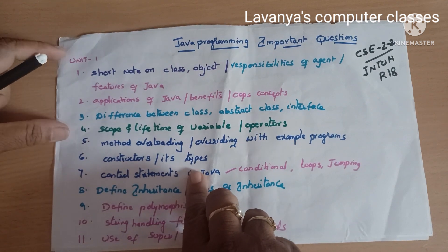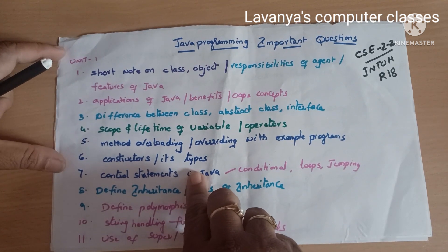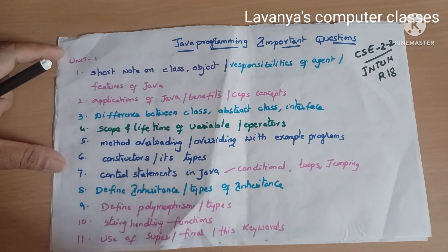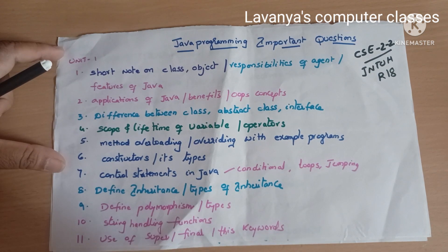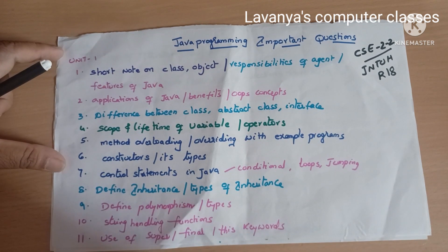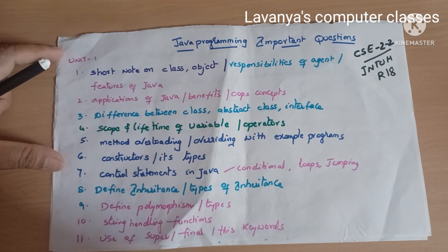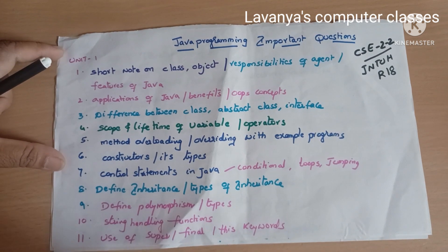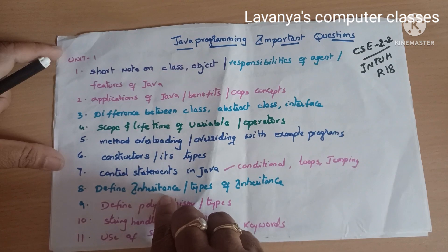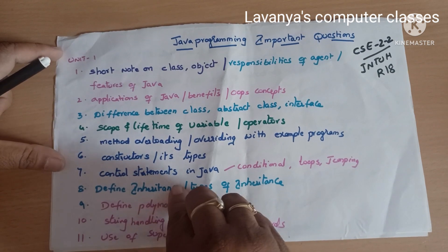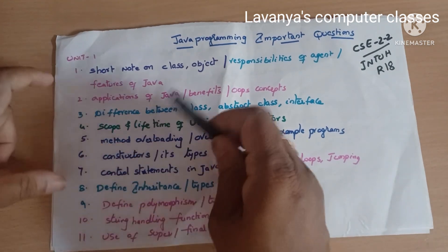We will start unit-wise important questions now. Don't wait to read all the questions at the end the night before the exam — if we prepare starting from today, reading at least unit-wise, we will definitely get good marks. So in Unit 1, the important question is short notes on class and object.